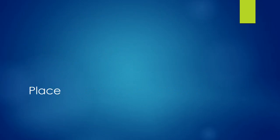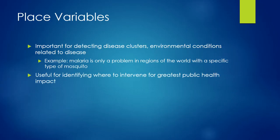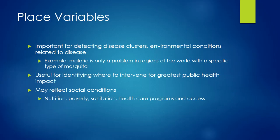Place is the next descriptive variable, largely focused on geography. It's useful when thinking about identifying potential disease clusters or environmental conditions that relate to disease. For example, malaria is only possible in places where the type of mosquito that carries it exists. Place can also help us decide where to intervene for the greatest impact, and it may reflect social conditions — nutrition, poverty, sanitation, and healthcare access all vary by geographic location, meaning person and place variables may be connected.